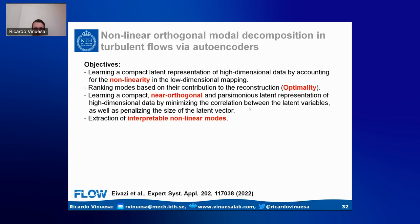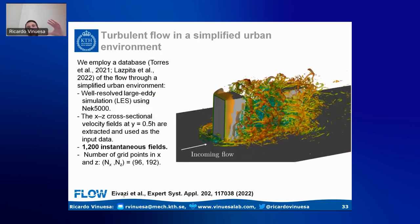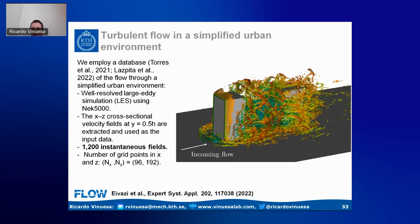There is quite some work on reduced-order models in fluid mechanics using neural networks, but not so much in turbulence. We use a database of the flow around two obstacles — a simplified urban environment — which has high-quality data with over 1,000 instantaneous snapshots. We take the plane at the middle of the two obstacles to assess the capabilities of autoencoders in producing reduced-order models. This is a 3D turbulent flow case with quite some shedding, making it an interesting case for modal decomposition.